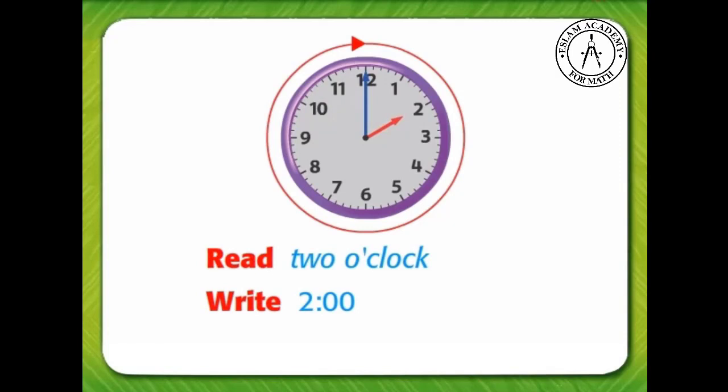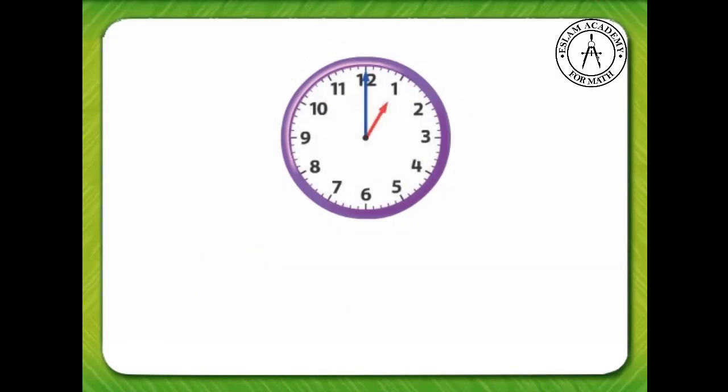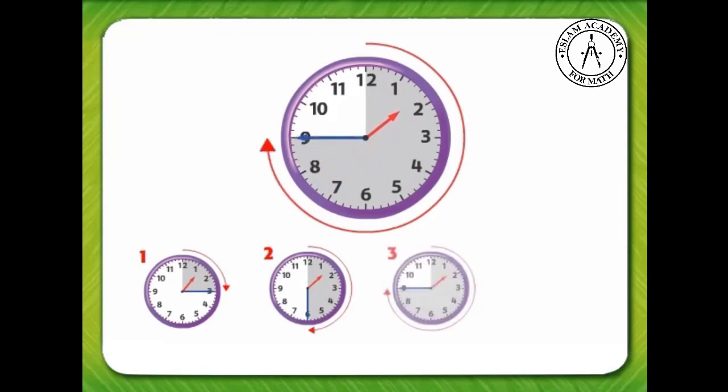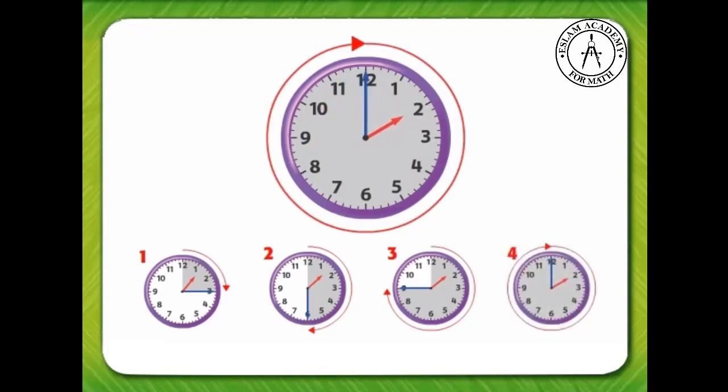How many quarter hours have passed since Max went to the dentist? From 1 to 1:15 is 1 quarter hour. From 1:15 to 1:30 is 2 quarter hours. From 1:30 to 1:45 is 3 quarter hours. And from 1:45 to 2 o'clock is 4 quarter hours. So 4 quarter hours or 1 hour have passed.